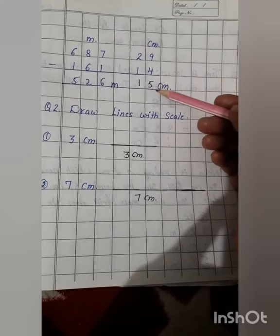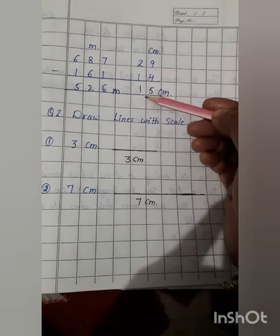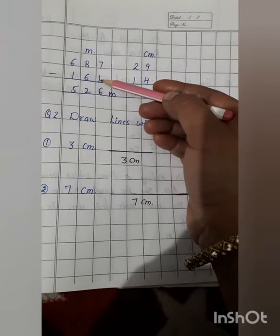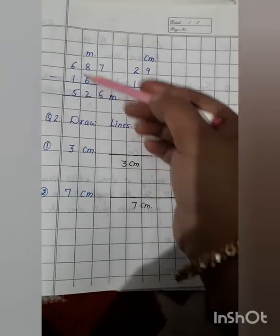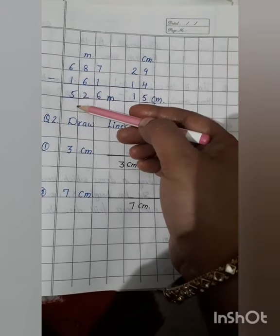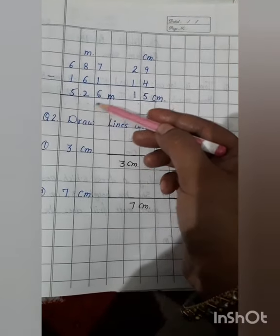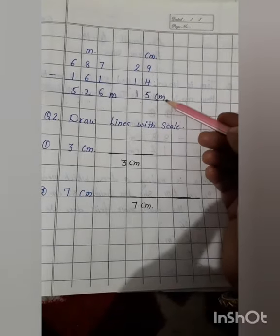9 minus 4, 5. 2 minus 1, 1. 7 minus 1, 6. 8 minus 6, 2. 6 minus 1, 5. So, answer is 526 meter and 15 centimeter.